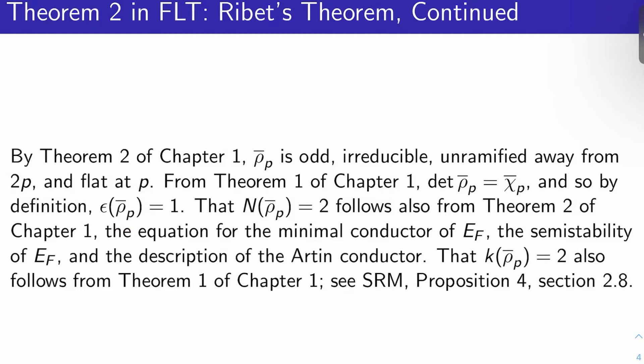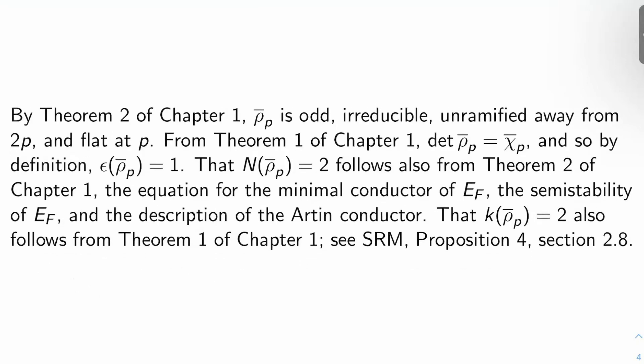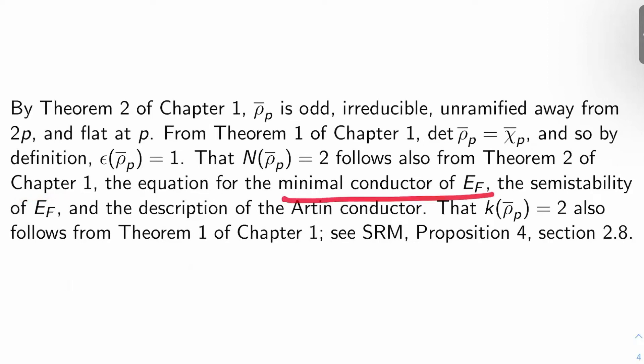I claim that N(ρ̄_p), the N from Serre's conjecture attached to this representation, is just two, and that follows from theorem two of chapter one, the equation for the minimal conductor of E_F, the semi-stability of E_F, and the description of the Artin conductor. I didn't give you the definition of the prescription of k, but I'll just tell you that k(ρ̄_p) = 2, and that follows from theorem one of chapter one. For more details you can see the Serre's conjecture paper, Proposition 4, section 2.8.